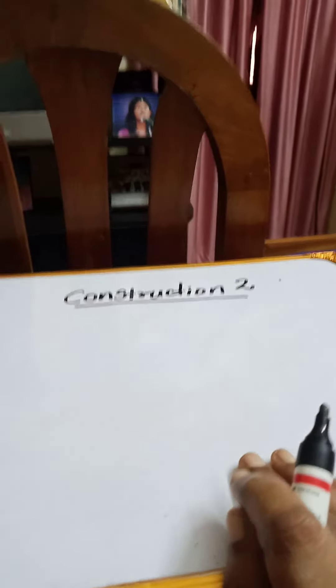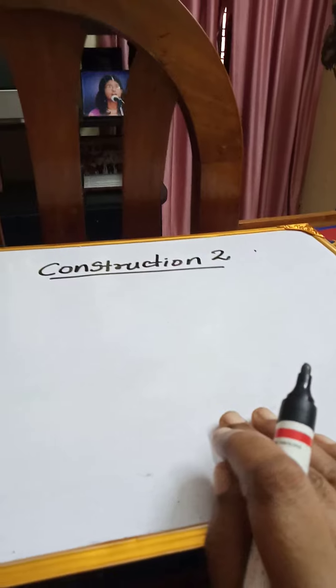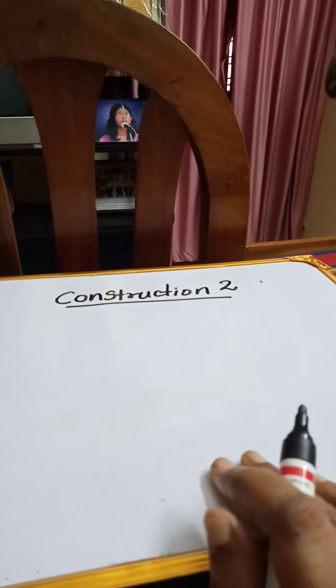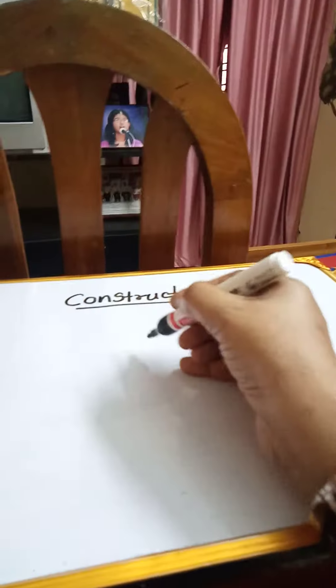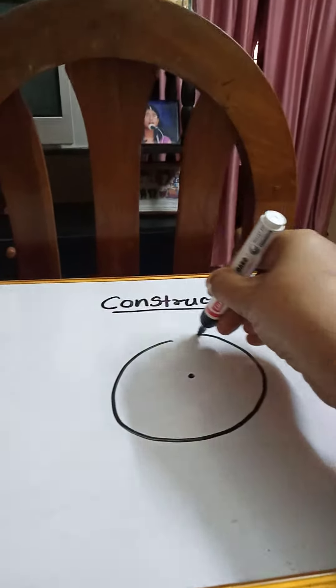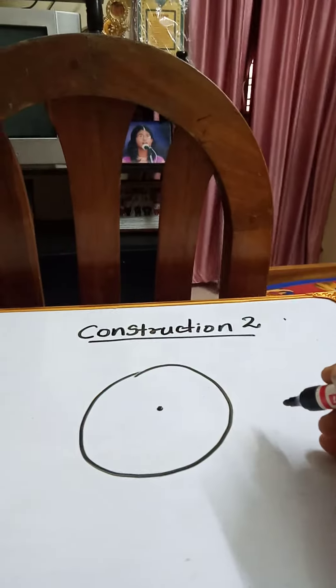Concentric circles, you know, circles with the same center. So here I am drawing two circles with different radii. One circle from the center: first you construct a circle of radius 4 centimeter, then construct another circle with radius 6 centimeter.